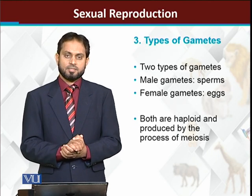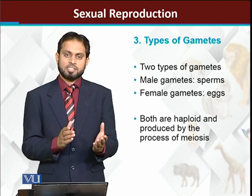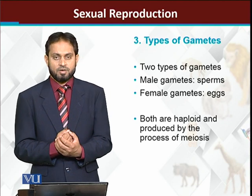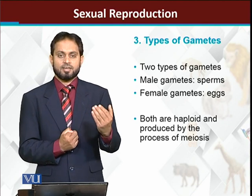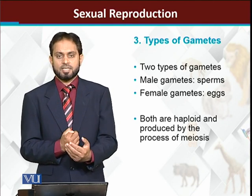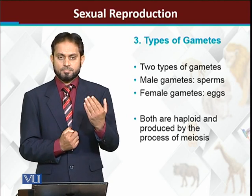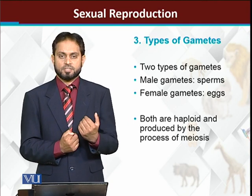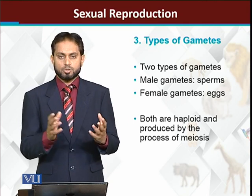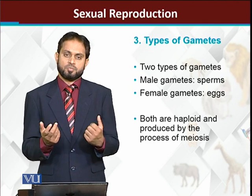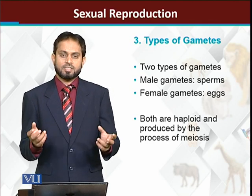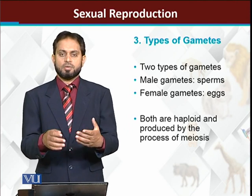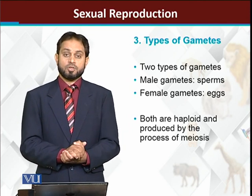Now there are two types of gametes. The organisms involved are male and female, so there are two types of gametes: male gametes are called sperms and female gametes are called eggs. These gametes are actually haploid — both eggs and sperms are produced by the meiosis process. When they combine, their fusion again gives us a diploid organism.